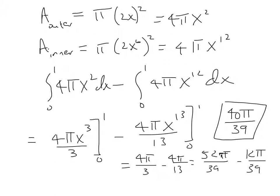The area of a face of the outer part of the washer would be pi times the radius squared, or pi times 2x squared, which would give us 4 pi x squared. The area of the inner part would be pi times the square of 2x to the sixth, which would give us 4 pi x to the twelfth.